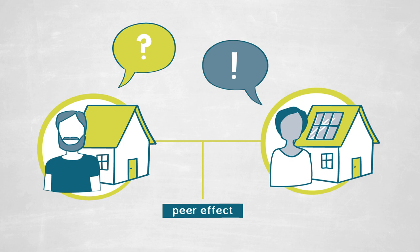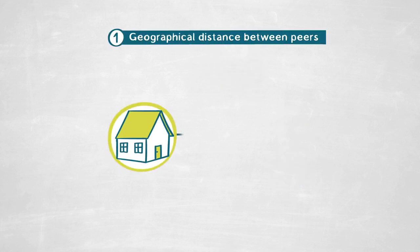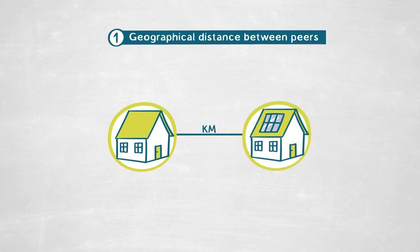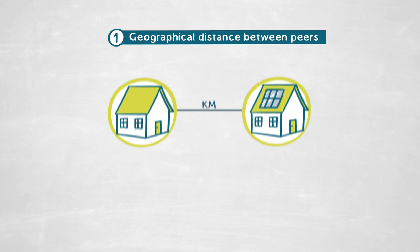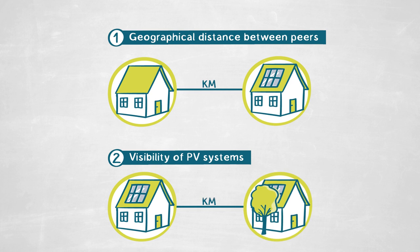We are interested not just in measuring the ties between peers by geographical distance between a potential adopter and an already existing PV system, but also in whether there is a measurable difference between PV systems that are visible and those that are non-visible, to further break down this peer effect and try to understand its underlying forces.